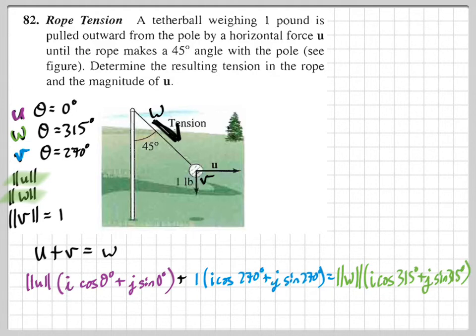So let's simplify this. Let's start putting in things that we know. We're going to simplify really quickly here. Cosine of 0 degrees is 1. Sine of 0 degrees is 0. So this is just gone right here. We have the magnitude of U times I plus.